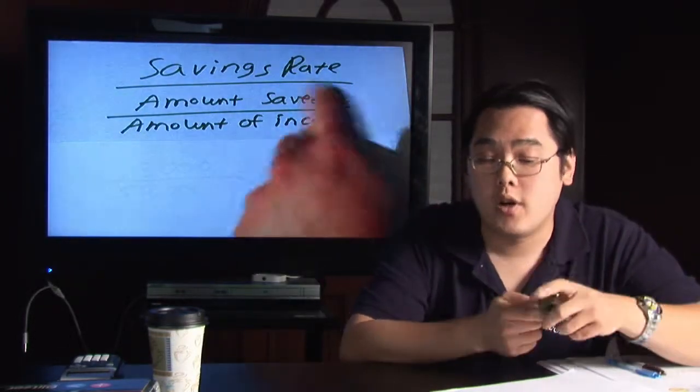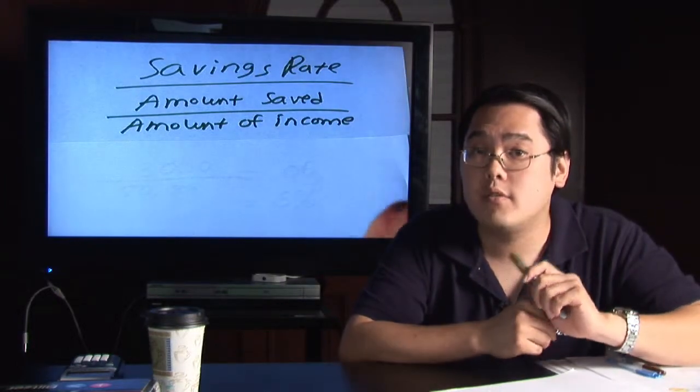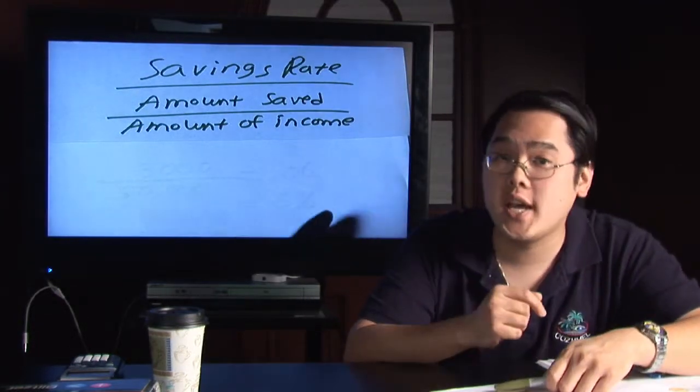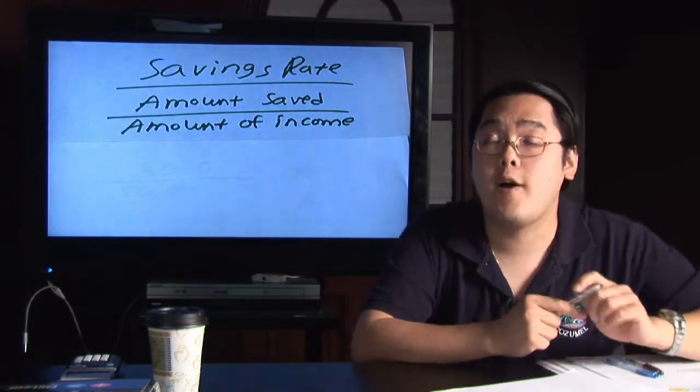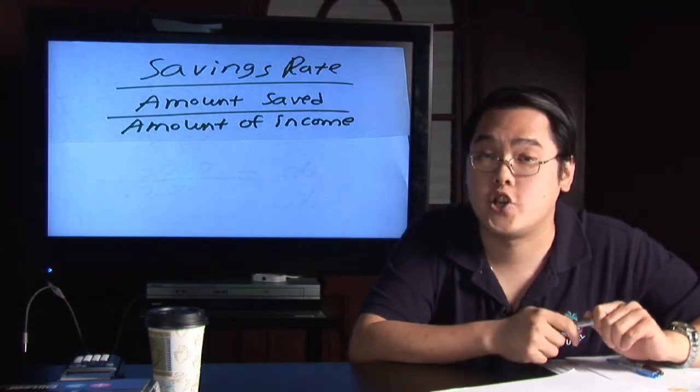It's a very simple formula. All you really need is to figure out over the course of the past year how much you've saved and how much money you made in the past year, your amount of income.